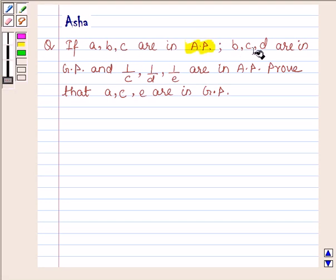B, C, and D are in GP, and 1 upon C, 1 upon D, and 1 upon E are in AP, prove that A, C, and E are in GP.